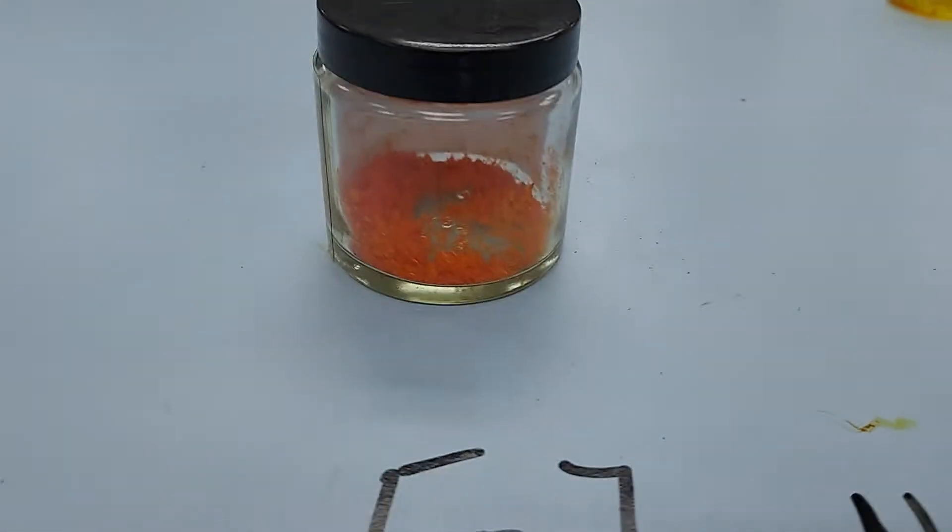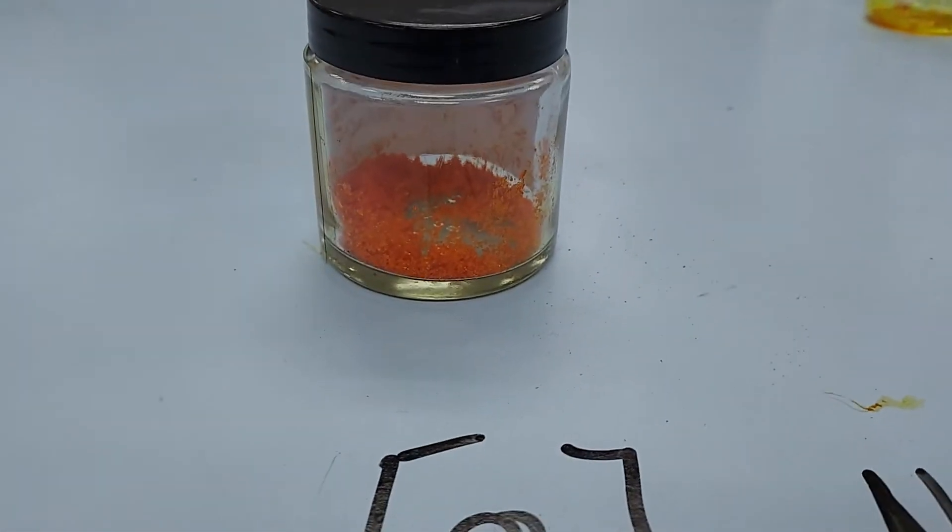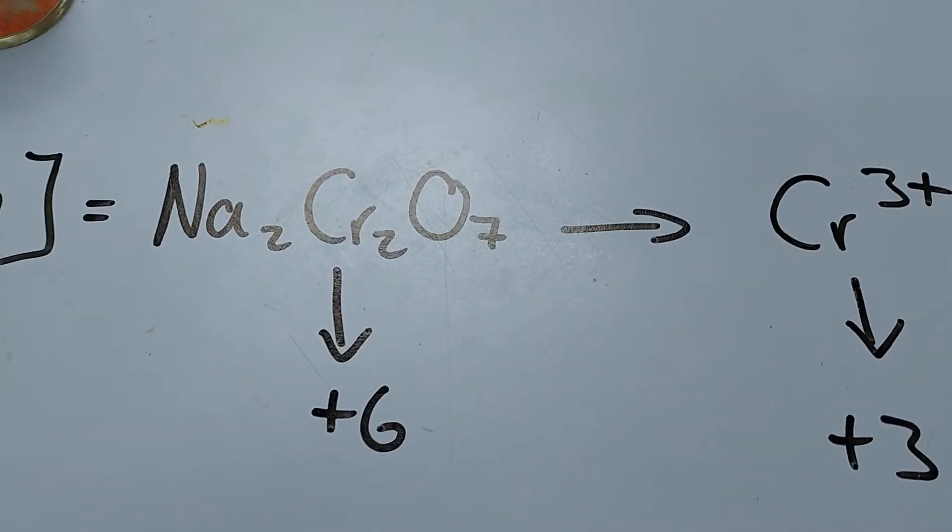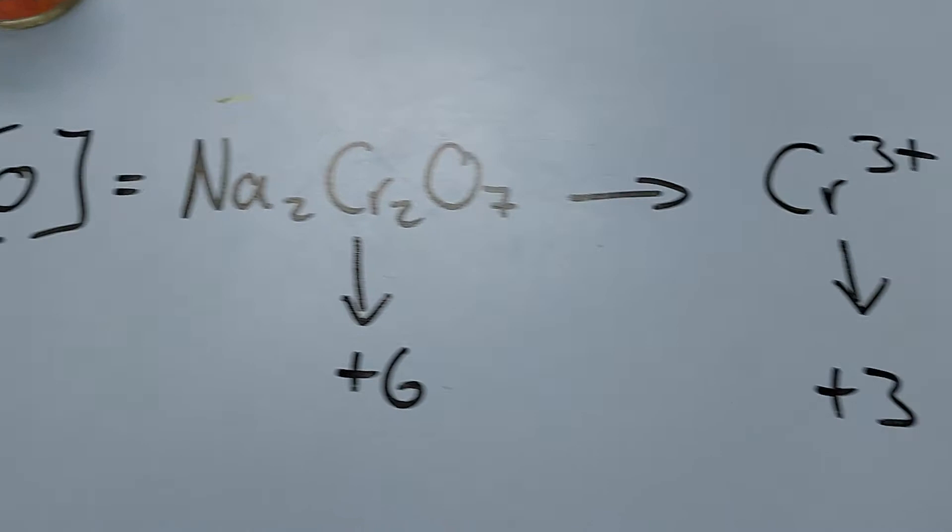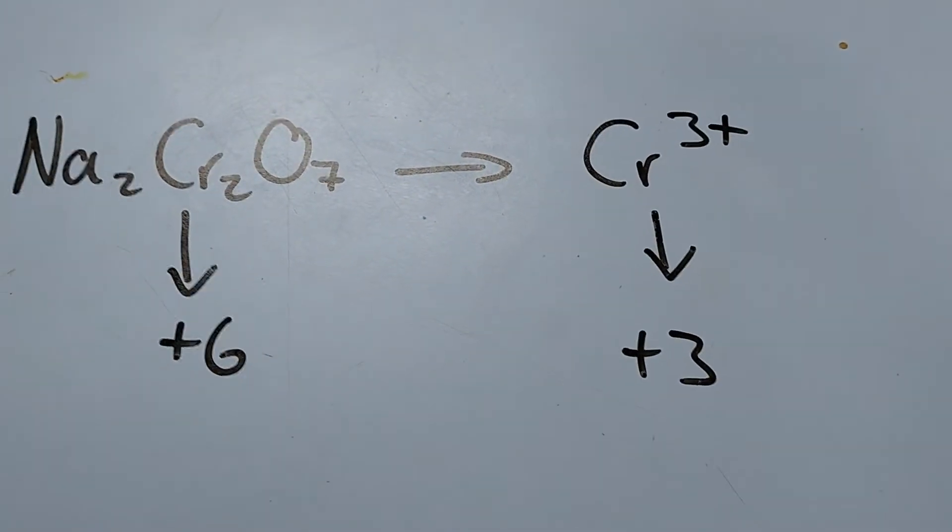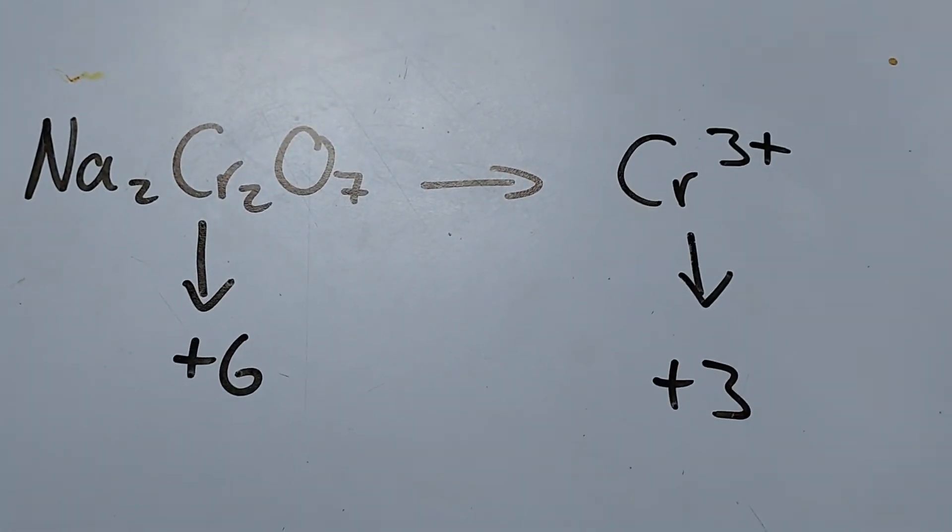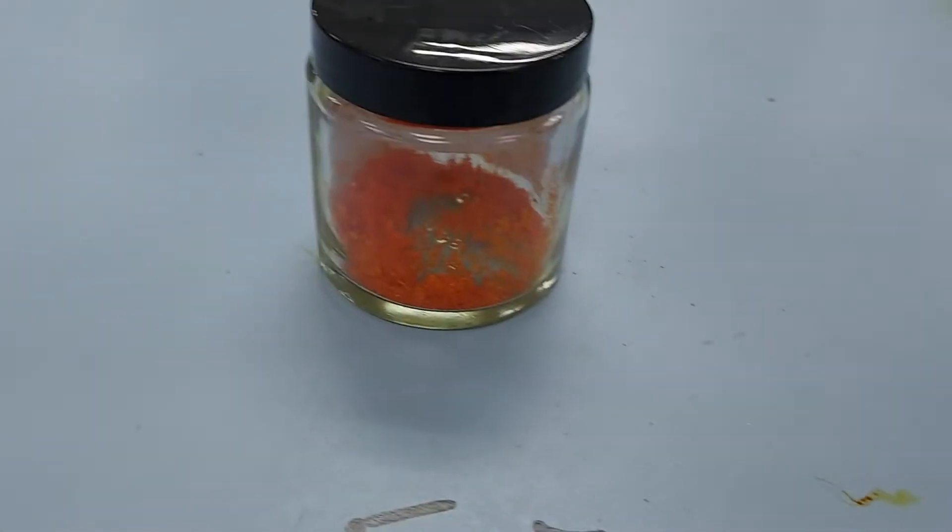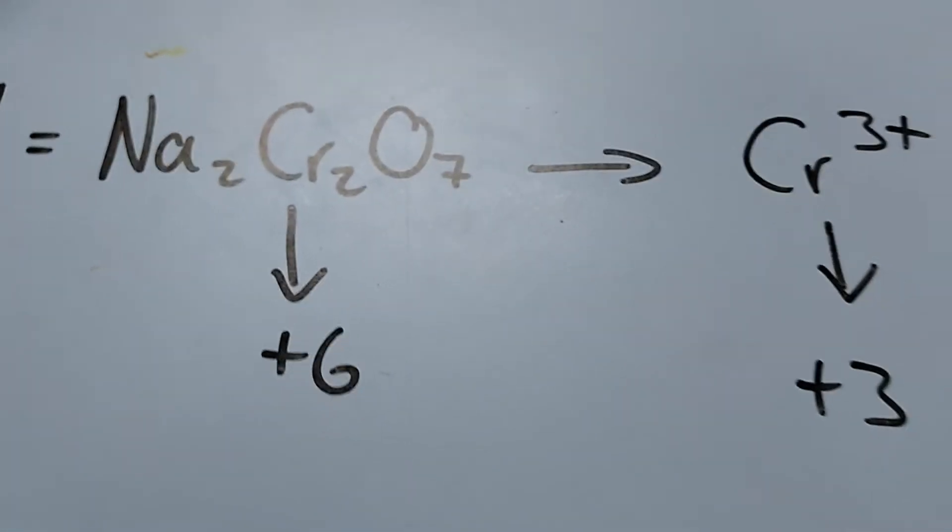What you should notice is a colour change. Here's our sodium dichromate. In the oxidation, the chromium is in the oxidation state plus 6. It will be reduced to plus 3 when it oxidises the alcohol. So we should see it go from this lovely orange colour to a green if it works.